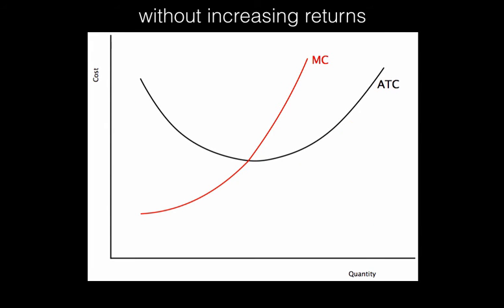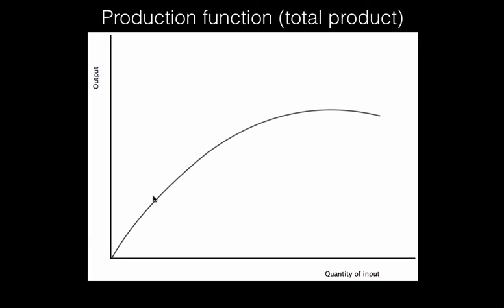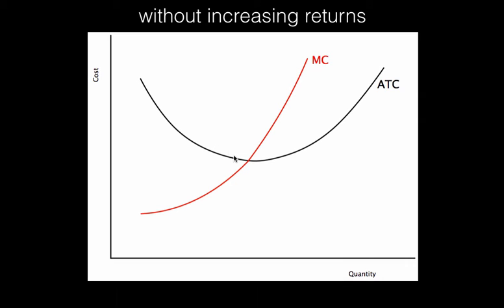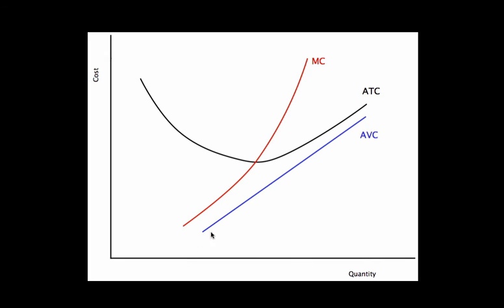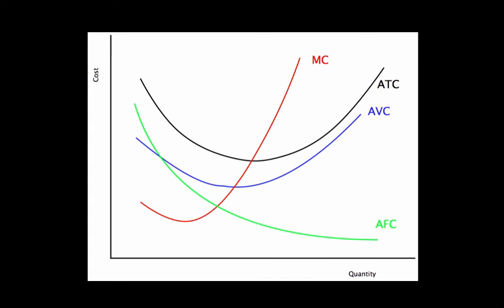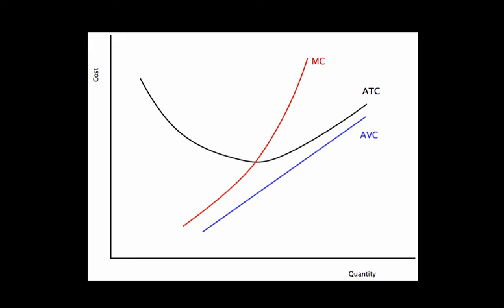Just a little aside: if we had a case that didn't have the increasing returns range — using that simplified production function we won't use much when talking about firms — you would still have a U-shaped ATC curve, because you'd still have AFC providing the spreading effect. But what would change is that if I take an average of a variable cost that's only rising, it's going to keep dragging up my average. So average variable cost would actually be an upward sloping line instead of the U-shape we normally have. Our standard cost curves will use the example with the increasing returns range, giving that swoosh-shaped marginal cost curve.